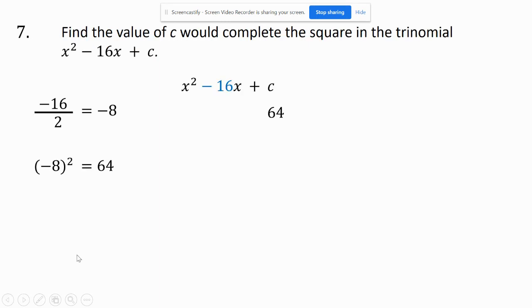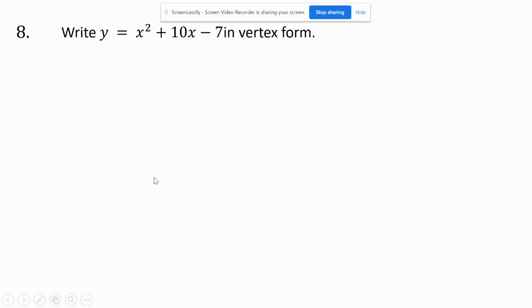The value is 64. Using that to complete the square, we're going to write y = x² + 10x - 7 in vertex form, which means I'm going to complete the square. I'm simply going to move the 7 over to the other side for a while.